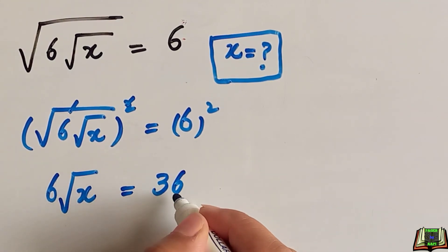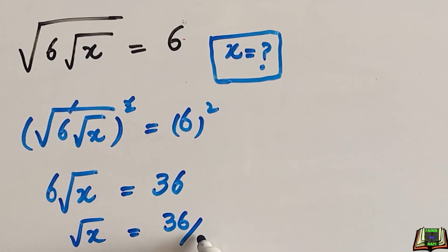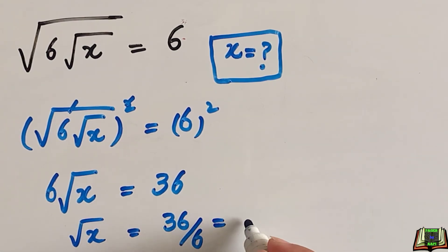In the next step, we will take this 6 to the right hand side, so it will be divided. 36 divided by 6 is equal to 6.